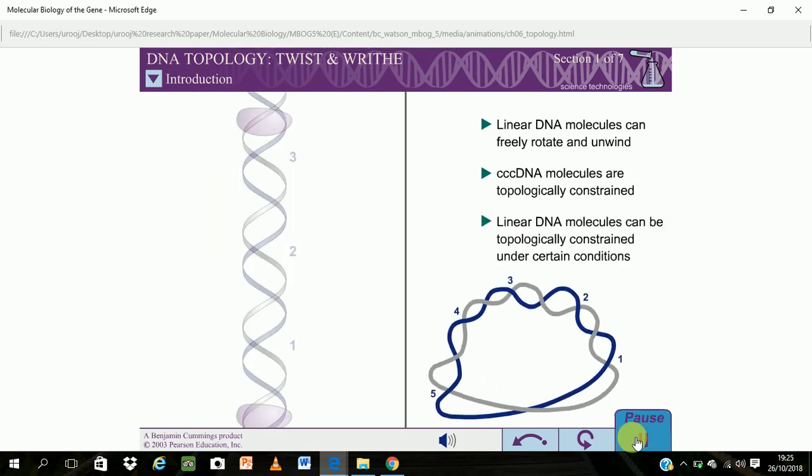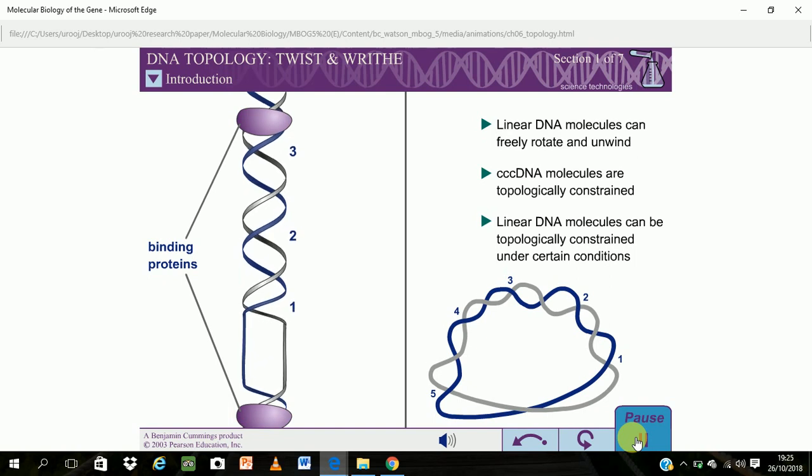Even the linear DNA molecules of eukaryotic chromosomes can be topologically constrained because of their interactions with other cellular components.